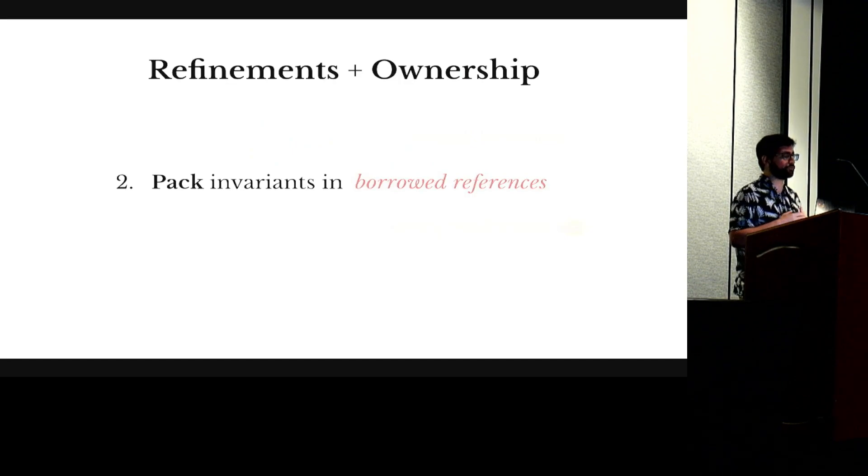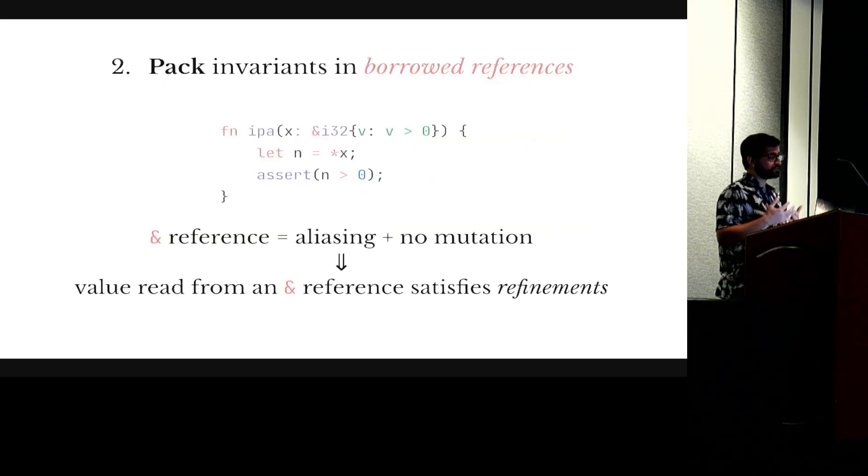So Rust has this concept of borrowing that lets you temporarily transfer the ownership of some location, and it does it by means of two types of references: shared and mutable. So a shared reference is typically presented as allowing aliasing but no mutation, which in the context of refinement types means that because we don't know that the location cannot be mutated by any other pointer, that we can safely assume the refinements we have on that value and effectively pack some invariant inside the reference.